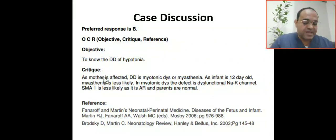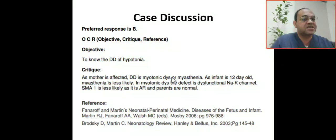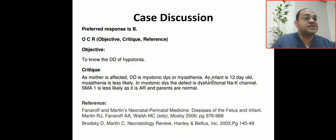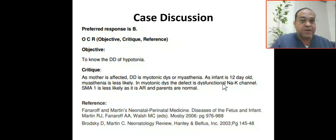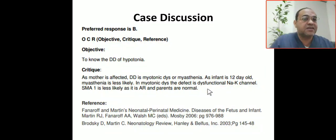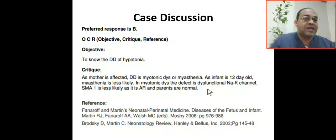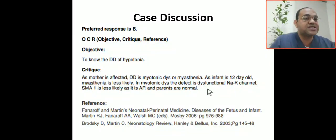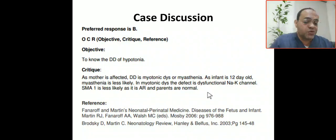Critical assessment: the mother is affected, narrowing our differential to myotonia dystrophica or myasthenia gravis. The infant is 12 days old, excluding myasthenia gravis since it presents immediately after birth. Myotonia dystrophica involves dysfunction of the sodium-potassium channel. Spinal muscular atrophy is less likely because it is autosomal recessive and parents are typically normal.